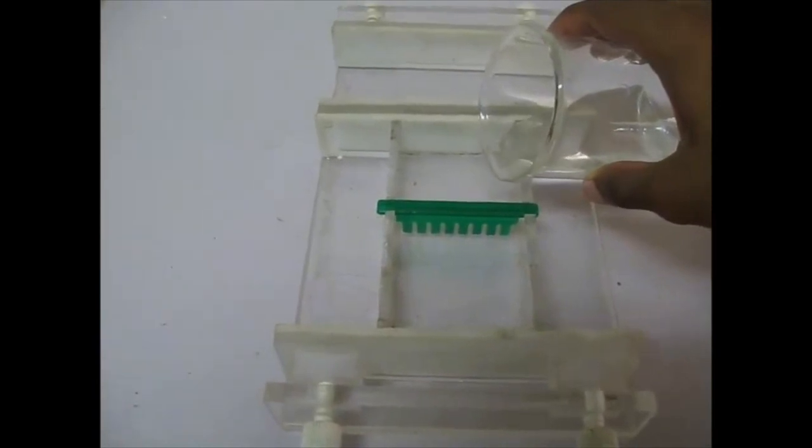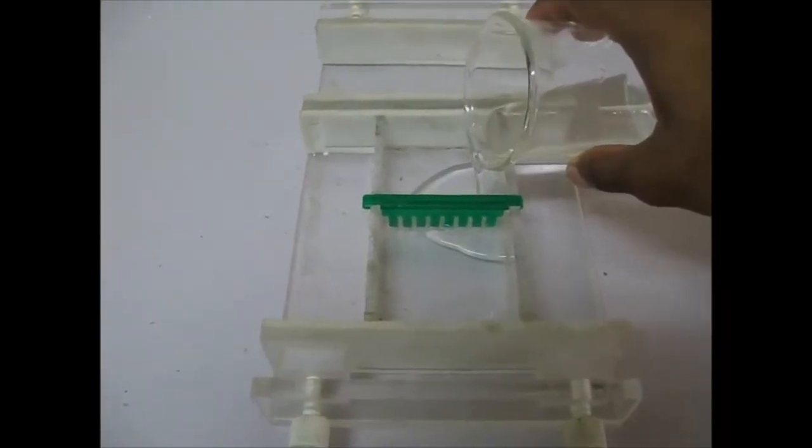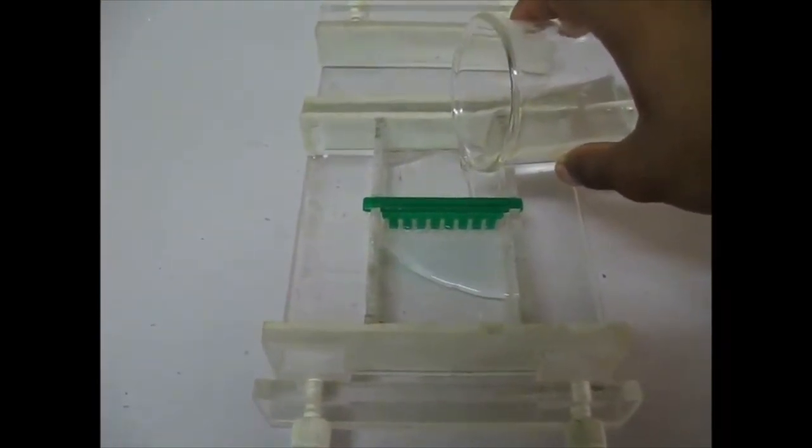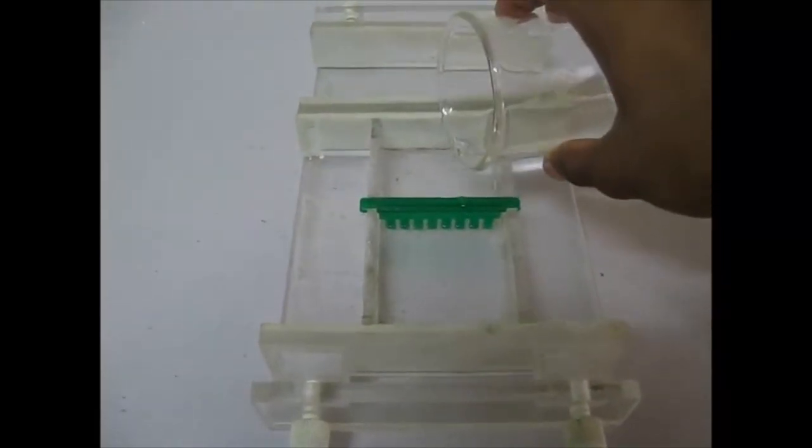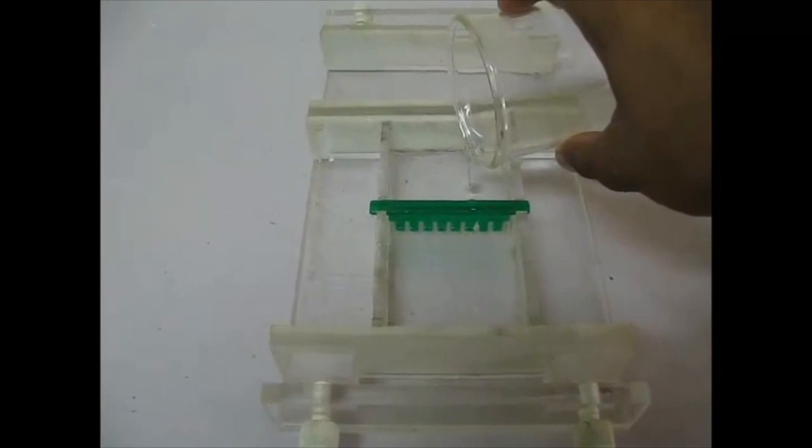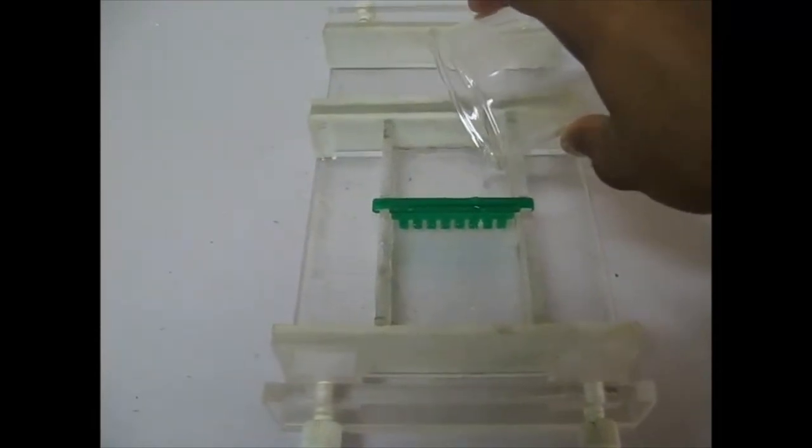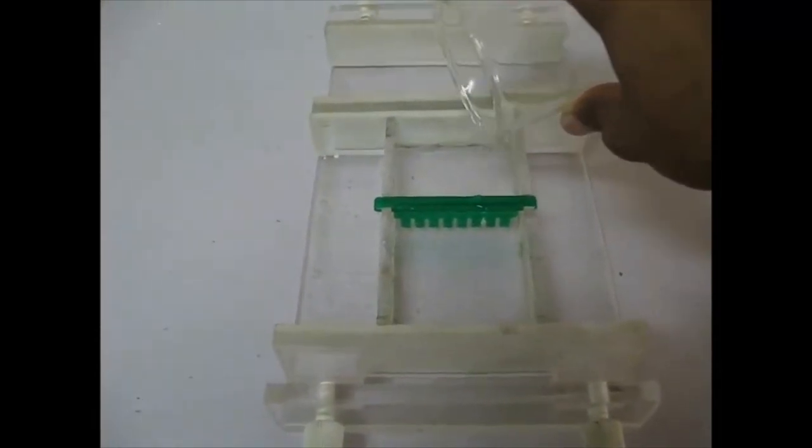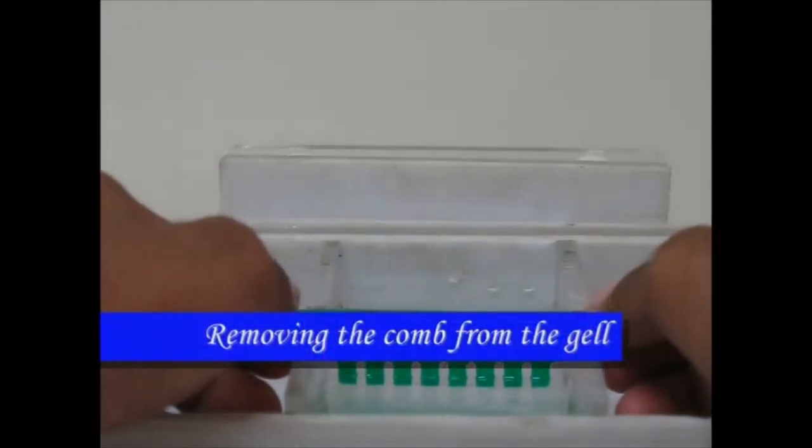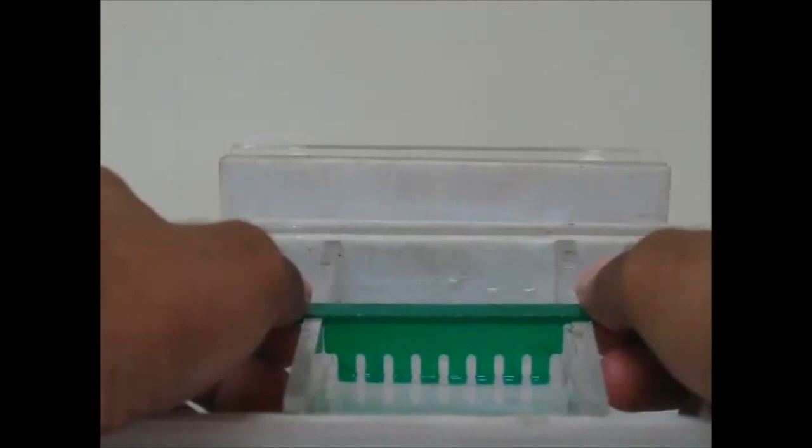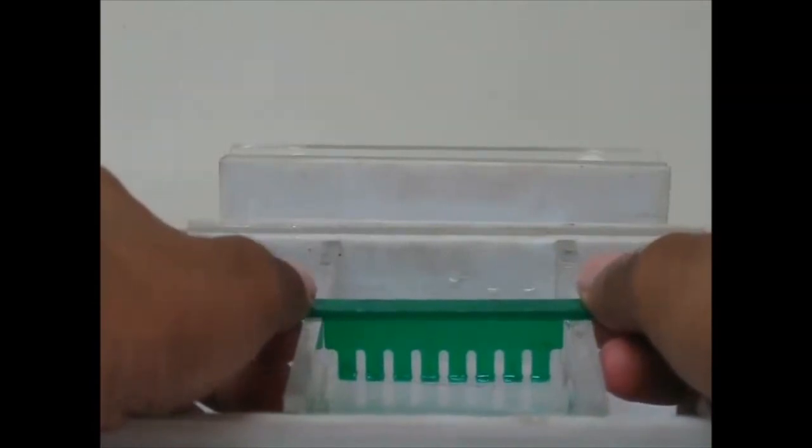After warming, at the bearable heat, pour the agarose gel into your template. We would consider that your template is not leaking and it is enclosed from all the sides. After the gel solidifies, gently remove the comb.